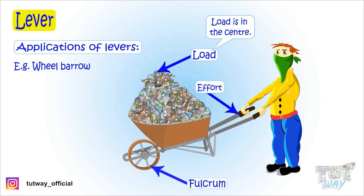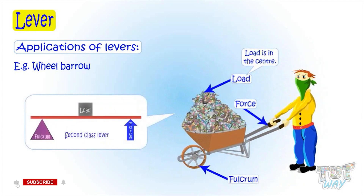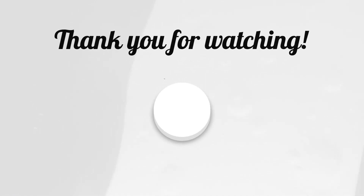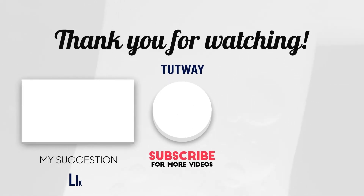Here the load is in the center — that is, in the middle of the fulcrum and the effort. We know that when the load is in the center, it's a second class lever. So a wheelbarrow is an example of a second class lever.